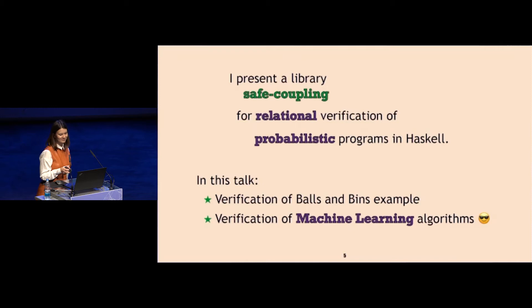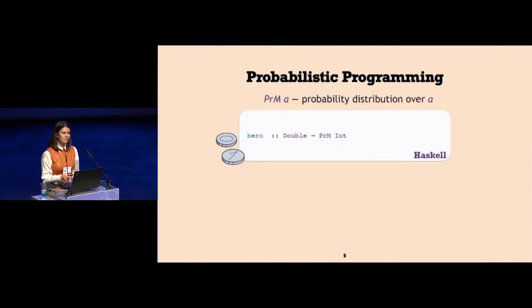To define a probabilistic program, I will need a bunch of primitives. At the very least, I want to simulate the process of throwing a ball to a bin, which is going to be a Bernoulli distribution, shortened as bern. It's a flip the coin distribution. It takes the first argument probability p and returns the integer of uncertain value. It can be one with probability p and zero with probability one minus p.